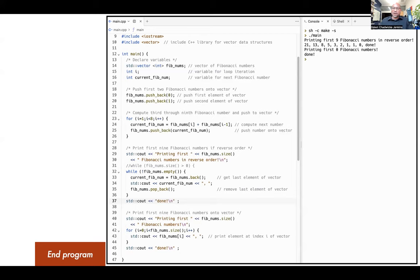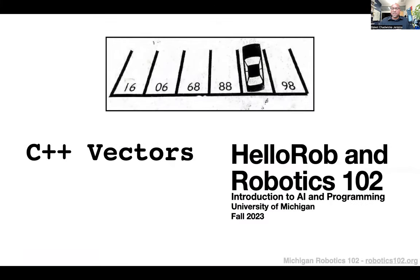We've now covered all the features of C++ vectors in this lecture, using the Fibonacci sequence as an example. You now have what you need to access and use laser range data from the robot, as well as use C++ vectors for anything you may need to represent. Thank you very much for your attention, and I'm looking forward to seeing your robots follow walls and do amazing things.